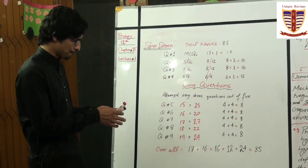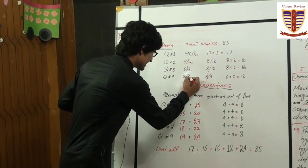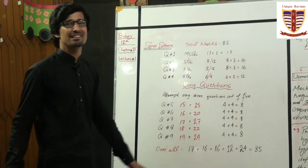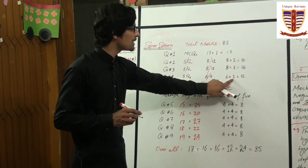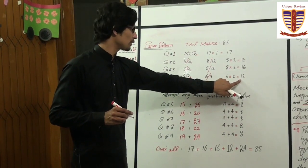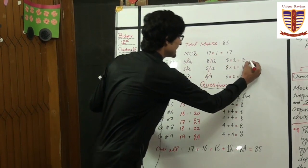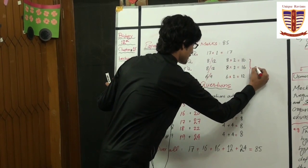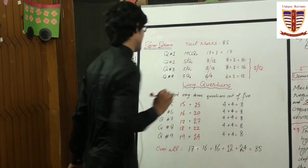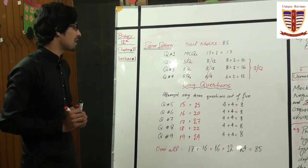Then question number 4 also contains short questions with total 9 short questions, from which you have to do 6 short questions, so 6 multiplied by 2 is equal to 12. So these are your three different short question segments.